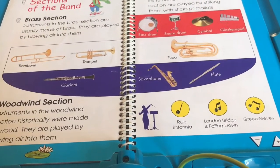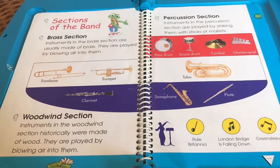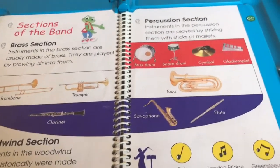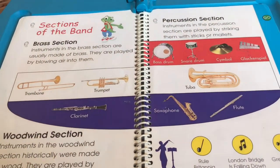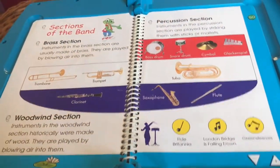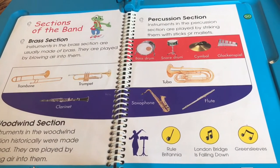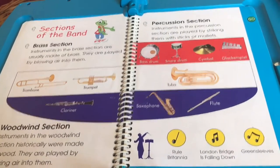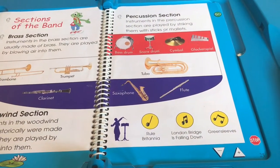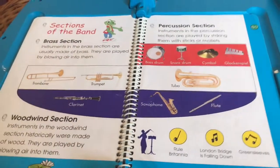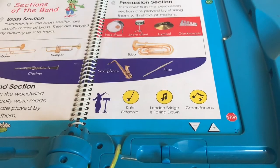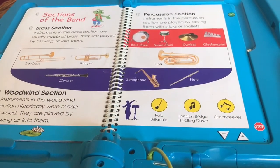Let's play a game. Two sections of a band sound more like a full band than a single section. Touch two sections that you'd like to hear together. That's the brass section. Now touch another section. That's the percussion section. Let's listen to the percussion section and the brass section play together. That's a good one.